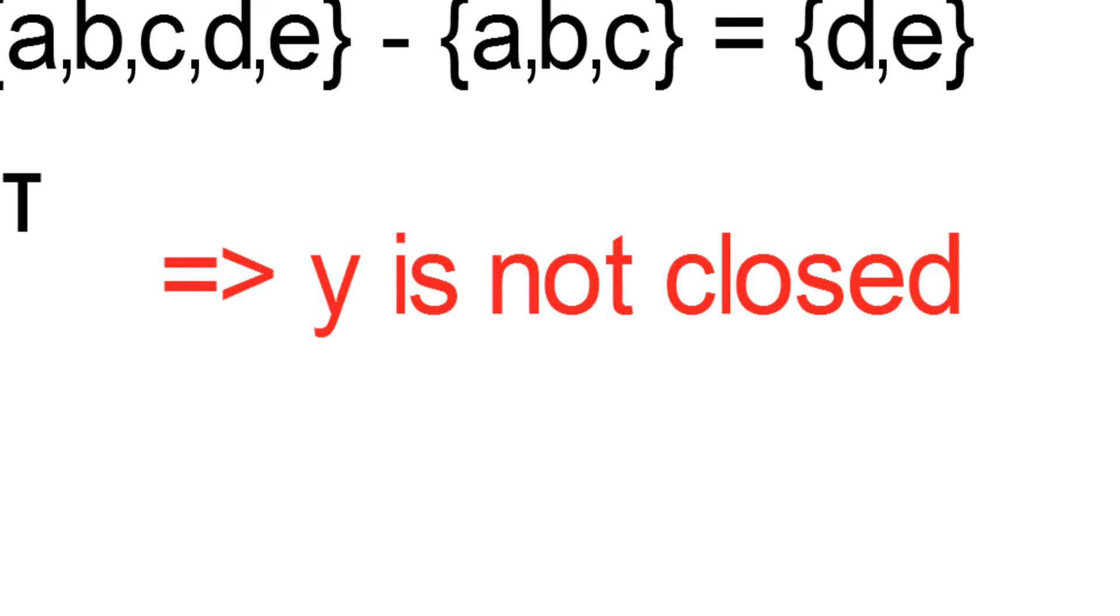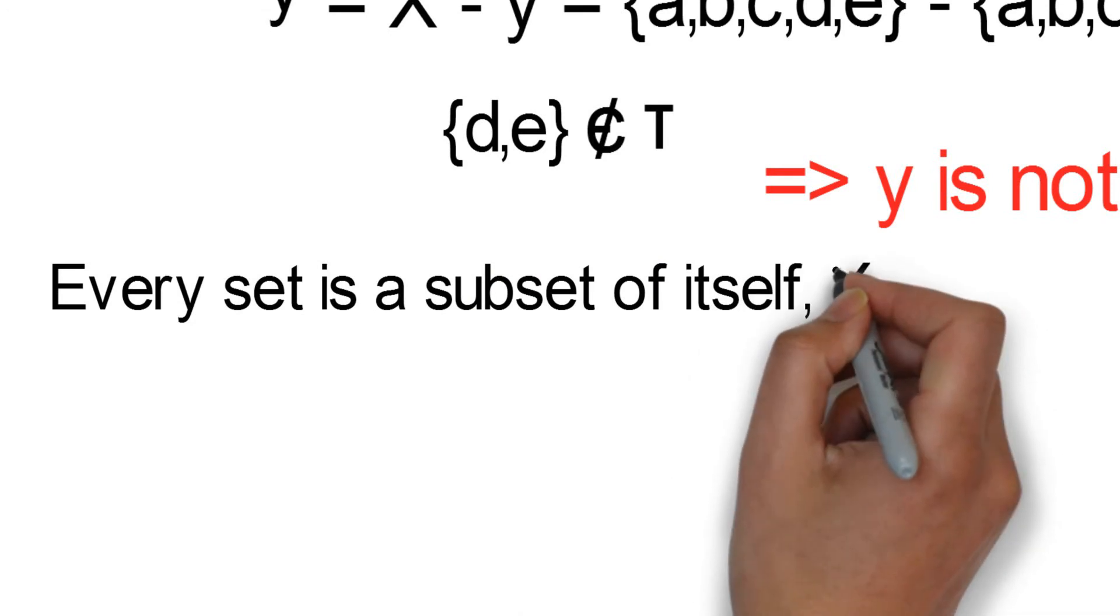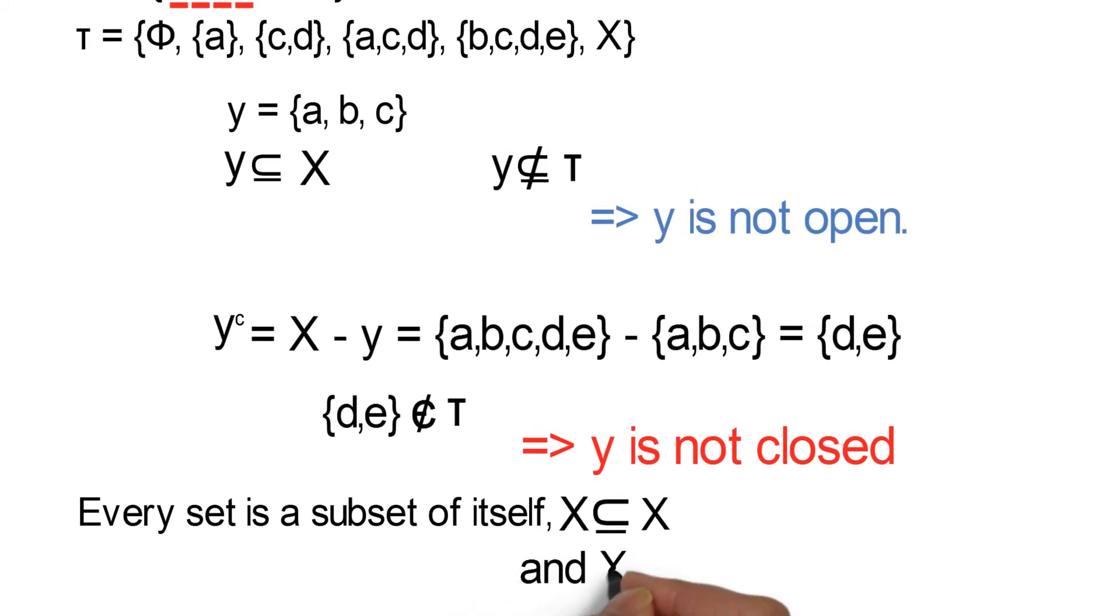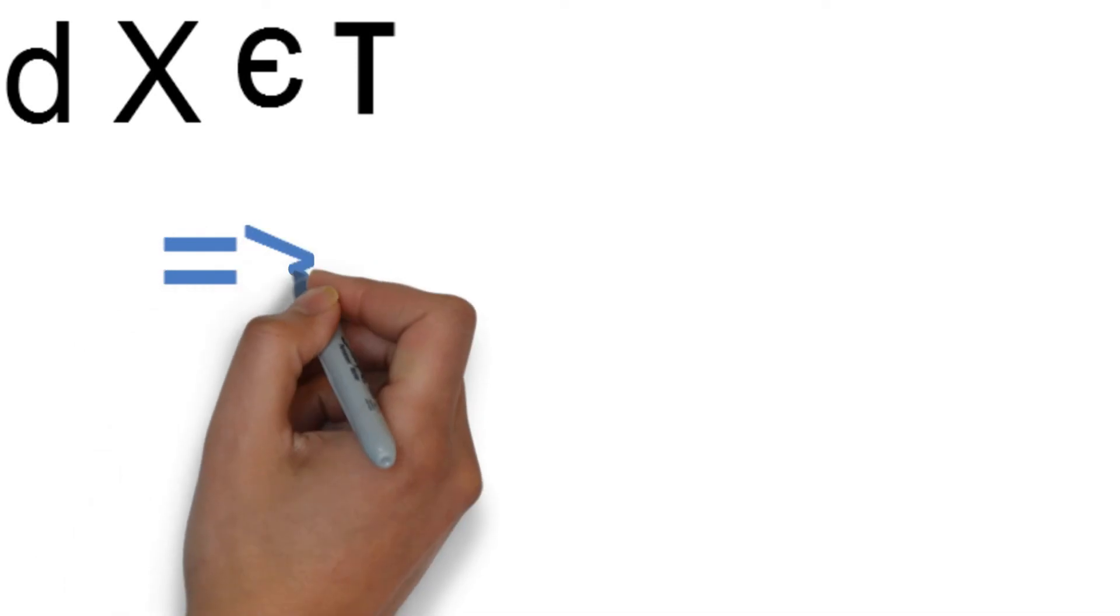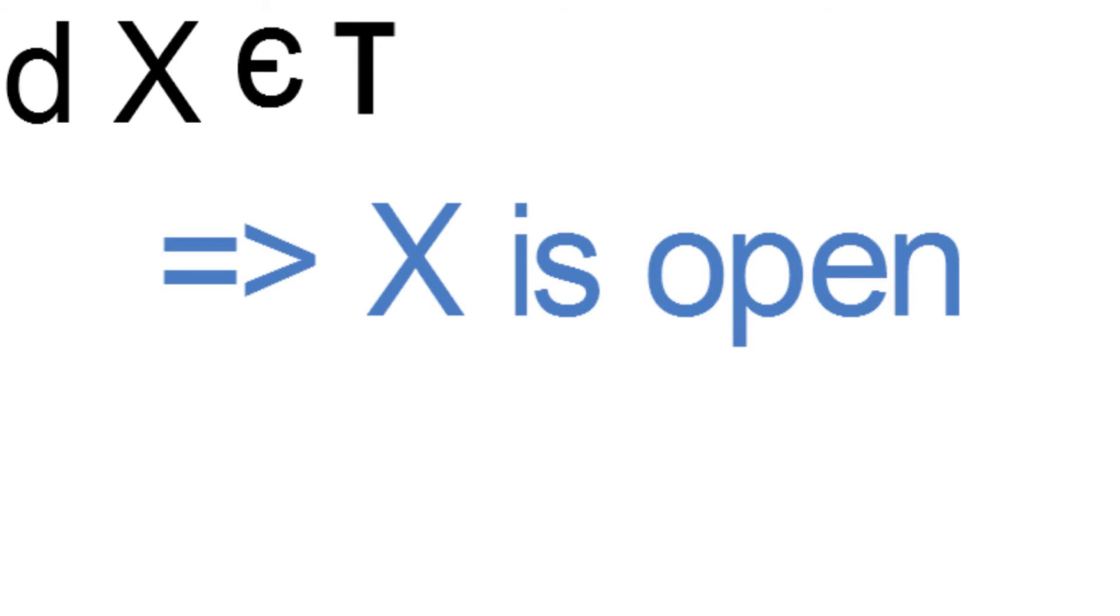What about the set X? Recall that every set is a subset of itself. So X is a subset of itself. And we can see that X is also a member of τ. This implies that X is an open set, because it is a subset of itself and it is a member of τ.